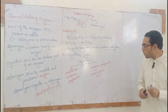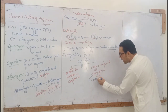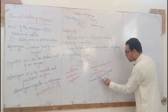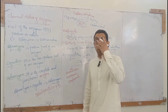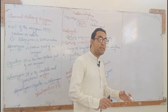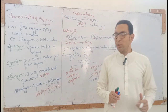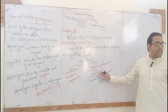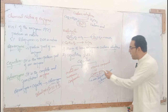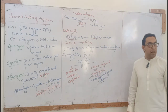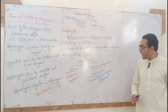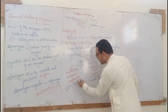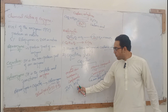Coenzymes are organic compounds. Coenzymes are derived from vitamins. So vitamins act as precursors for coenzymes. For example, a vitamin can serve as or give rise to a coenzyme. Coenzymes are an important category of cofactors — they are the organic compound type of cofactor.